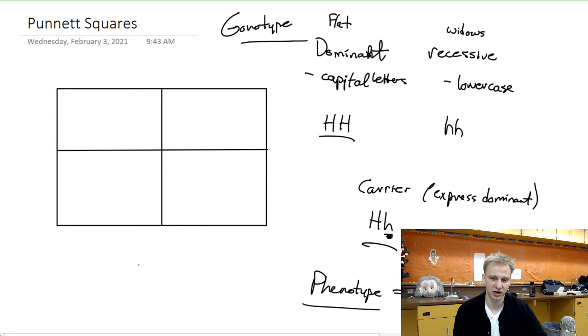And so when we do Punnett squares, what we're looking at is we want to say, okay, mom has this, dad has this, what are the percentages of a certain hairline that the child will have? So let's say that we have my dad. My dad has a very strong widow's peak, he has exactly my hairline, so we'll say that this is my dad.